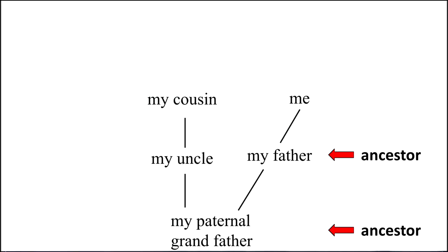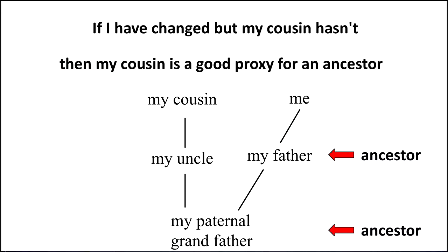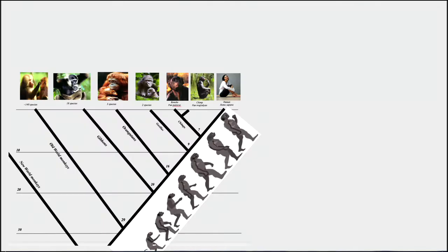However, let's suppose that my uncle and my cousin did not change, they didn't evolve, didn't diverge from my paternal grandfather and that's why the line is vertical, but me and my father we diverge to the right. So if I've changed but my cousin hasn't then my cousin is a good proxy for an ancestor and I could use my cousin to represent my paternal grandfather.